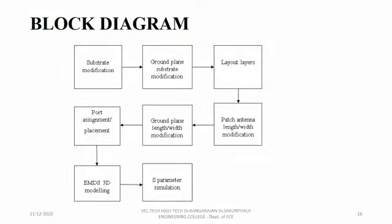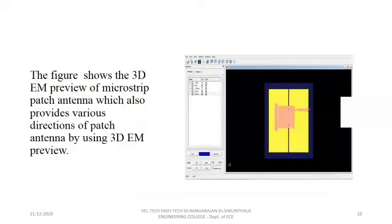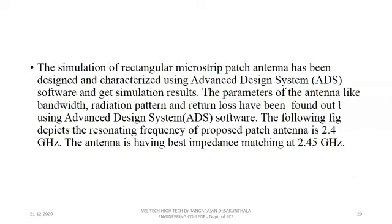This is the block diagram explanation of our project. First, the modification of substrate, ground plane, patch antenna length, ground plane length, width, layered layers, and port assignment takes place. The final two steps involve 3D modeling and S-parameter simulation. This is the simulation result and the 3D preview of the microstrip patch antenna, which is the outcome of our project. The simulation of the rectangular microstrip patch antenna was designed and characterized using ADS software and the simulation results were obtained.